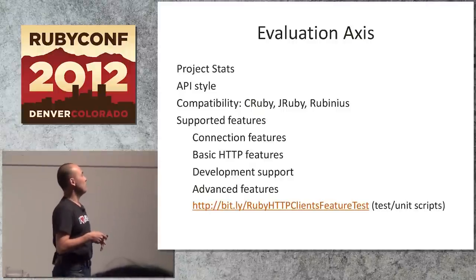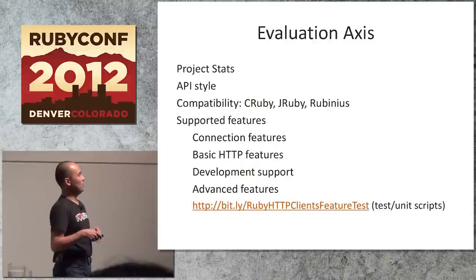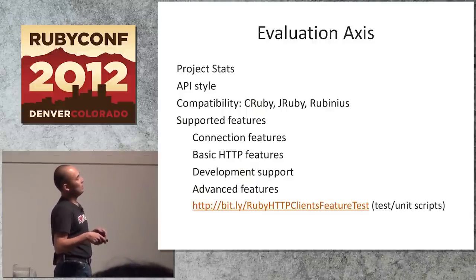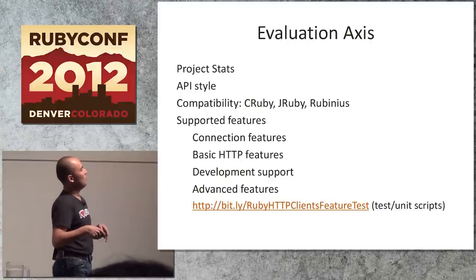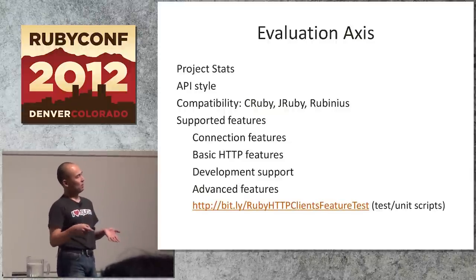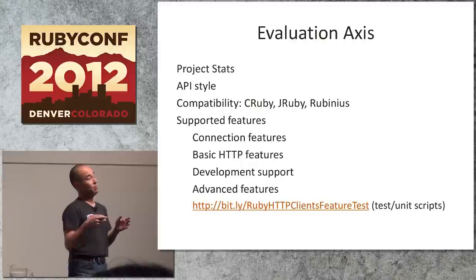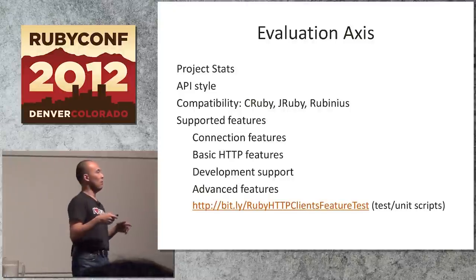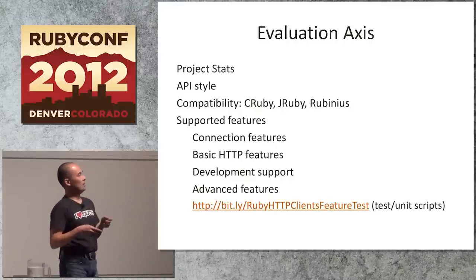The evaluation axes are: project stats, API style, compatibility, supported features, connection features, basic HTTP features, and so on. I created a test unit script for checking these supported features — you can try the tests from this URL. The script shows how to use specific features like posting multipart forms, basic auth goals, and proxy authentication — you can use these tests as examples.